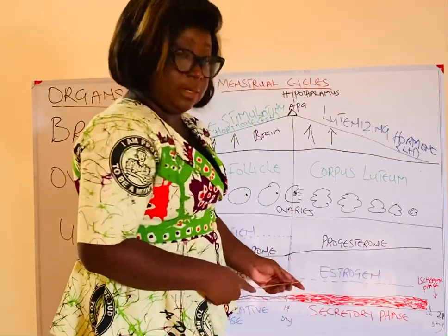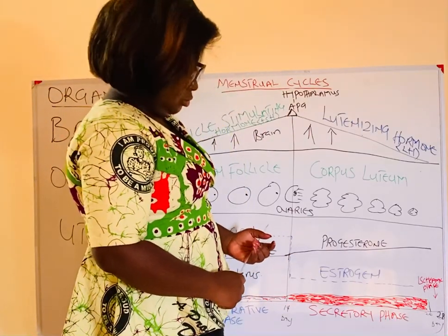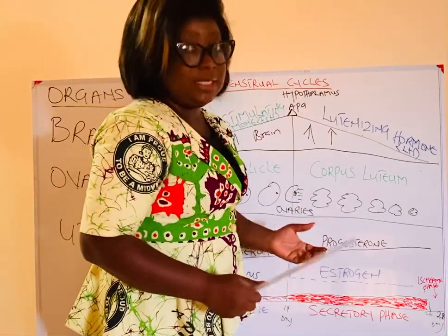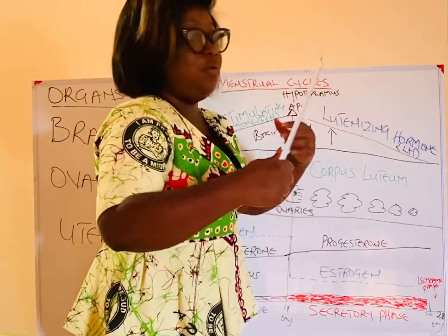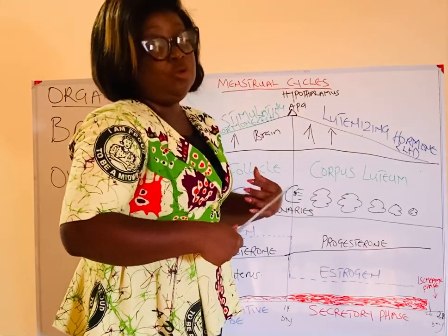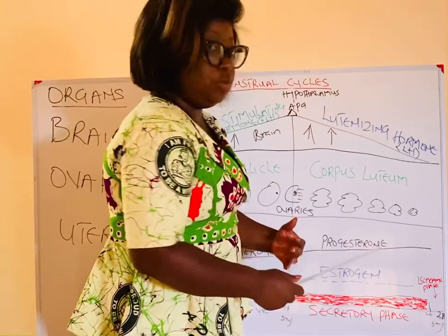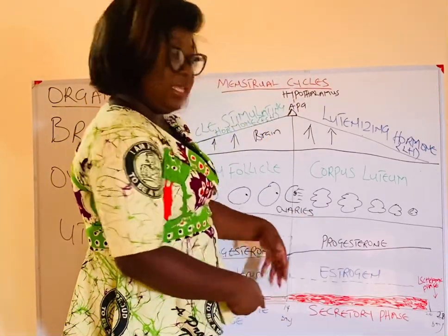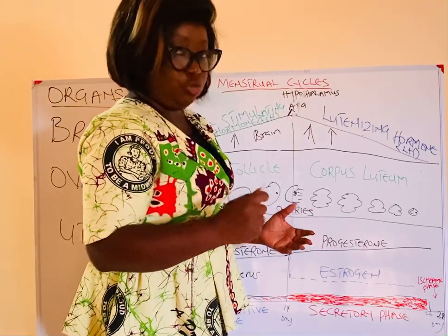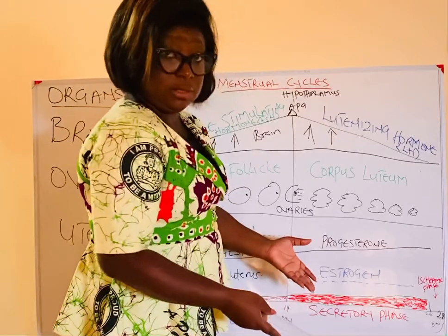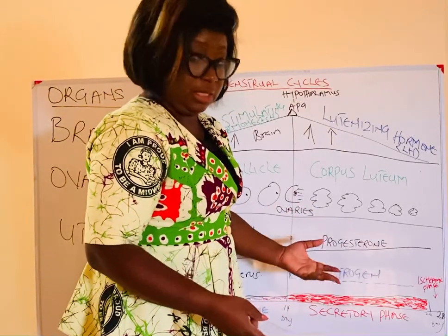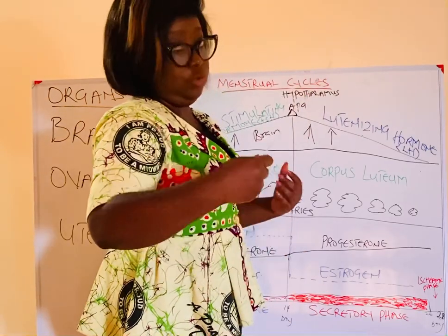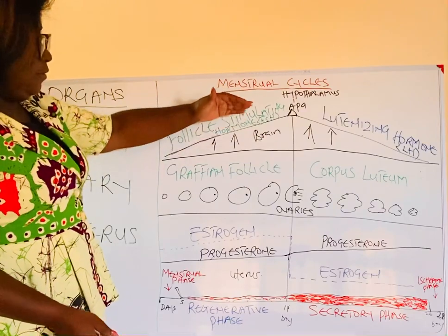The phase where progesterone prepares the uterus post-ovulation is known as the secretory phase. Around day 26, it becomes obvious that pregnancy did not occur, so everything that was being prepared starts dying off. By day 28, all that has died off sheds through menstrual flow — and the day you see that bleeding is day one of your new menstrual cycle, and the cycle begins again.